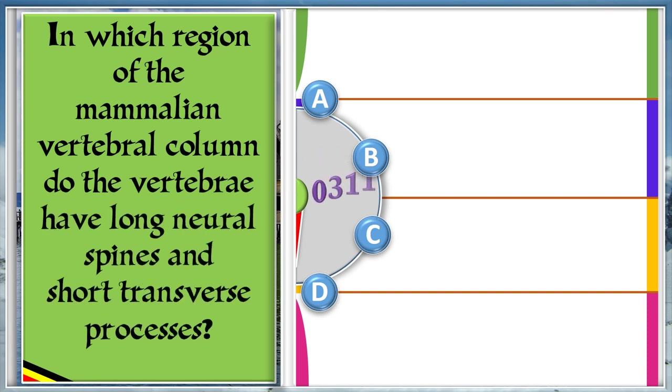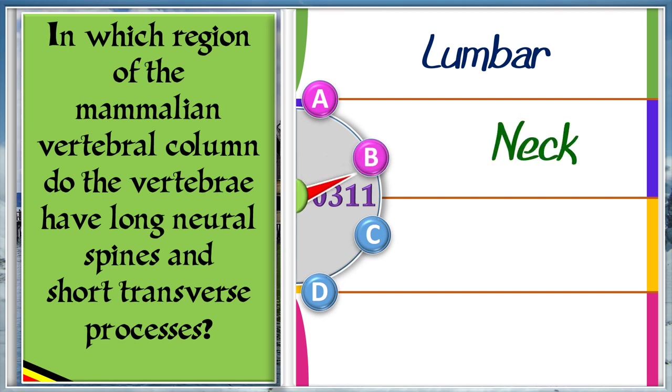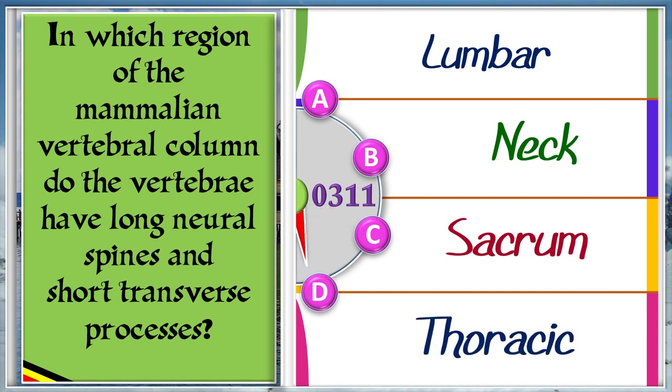Which vertebrae have long neurospines and short transverse processes? A: Lumbar. B: Neck. C: Sacrum. D: Thoracic. And the answer is D, thoracic.